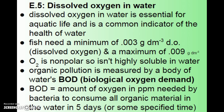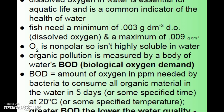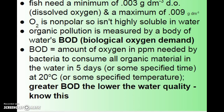Organic pollution is measured by a body of water's BOD, or biological oxygen demand. The more pollution that's in the water, the more oxygen it needs to break it down. BOD is measured as the amount of oxygen in parts per million needed by the bacteria to consume all the organic material in the water, typically in five days at 20 degrees Celsius. The greater the BOD, the lower the water quality.